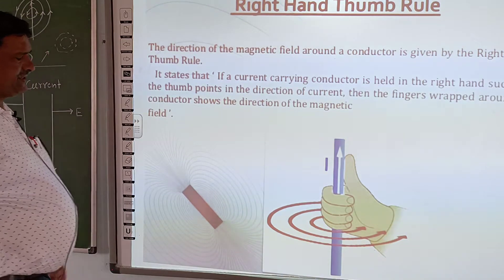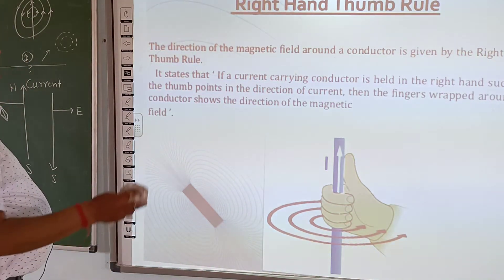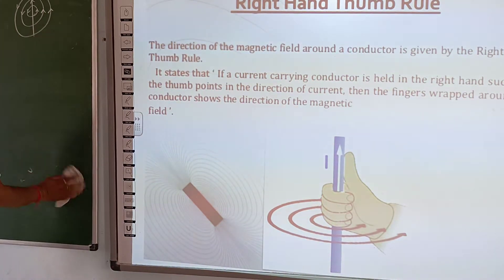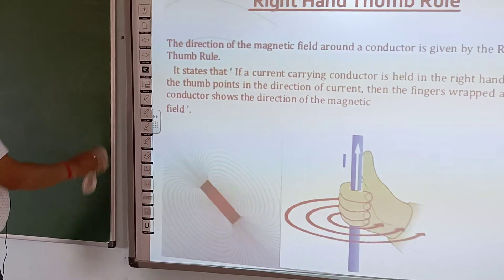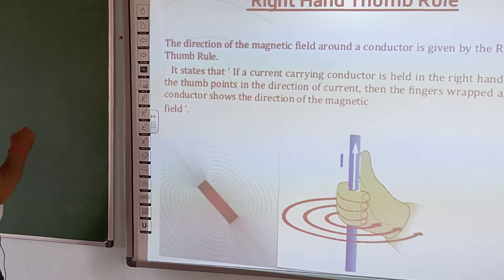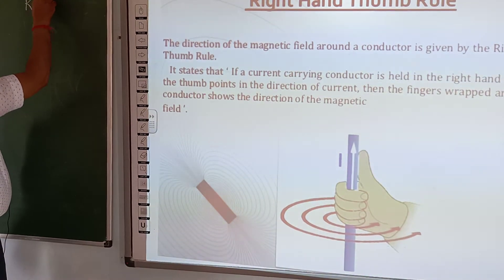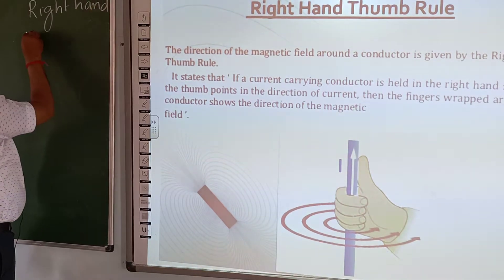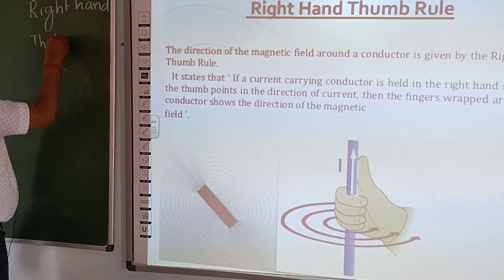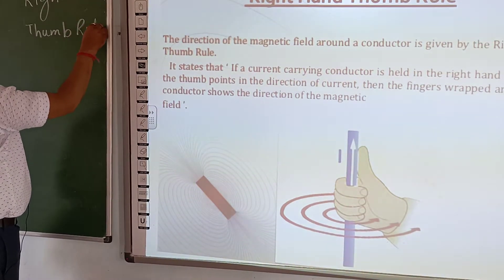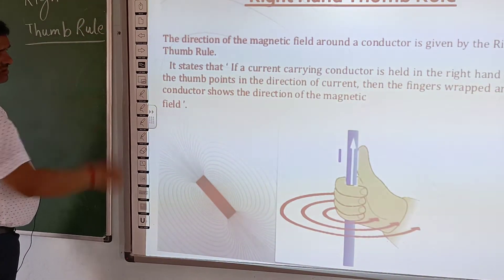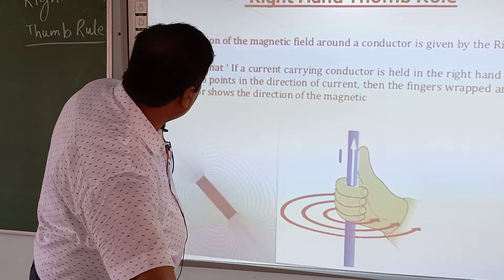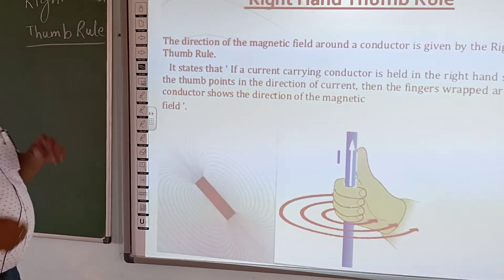Current in electric conductors and straight wires. Now, this is the right hand thumb rule. So we define the right hand thumb rule — that is the direction of the magnetic field, clockwise and anticlockwise. Right hand thumb rule: the direction of the magnetic field around a conductor.